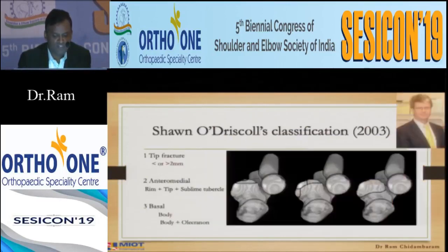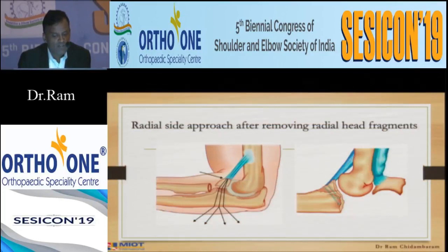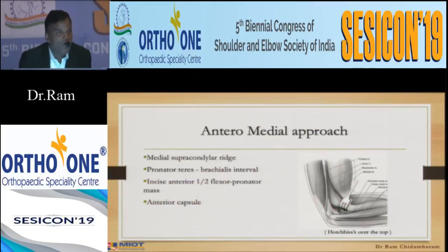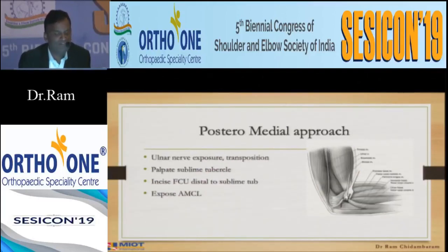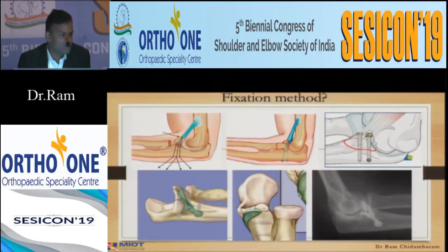For coronoid fractures, you have to recognize the pattern and deal with it. This is the original classification from many years ago, modified by Sean O'Driscoll, with the main focus on the anteromedial facet. To fix the coronoid: if the radial head is fractured you can approach through the radial head fragment, or if you want the medial side you can go either over or under the common flexor origin — anteromedial or posteromedial. Fixation method varies and there are many options.